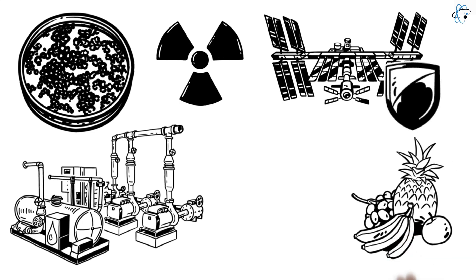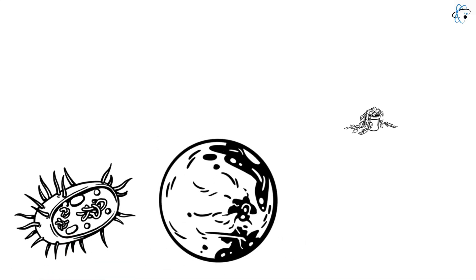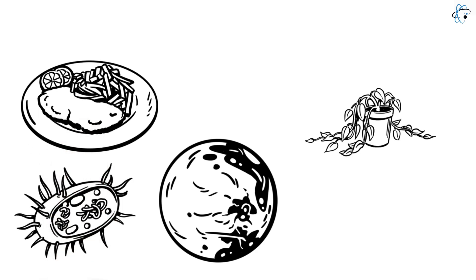Some microbes even produce nutrients like vitamin B12, and starch or fat storing bacteria could be used to generate biofuel for spacecraft. Cyanobacteria or algae could transform the carbon dioxide in the Martian atmosphere into oxygen while also providing biomass for food production.